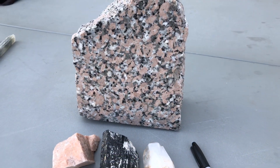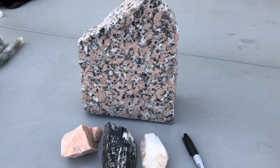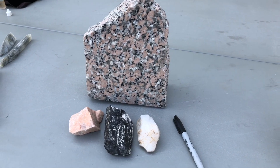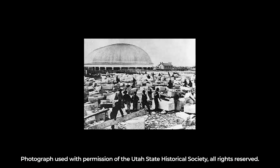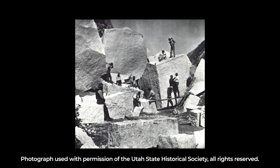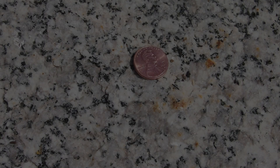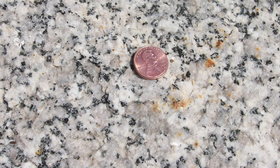Different combinations of minerals give us a lot of different varieties of granite, such as the salt and pepper, or temple granite, of the Salt Lake City Temple. It cooled and crystallized as a large mass about five miles beneath the ground surface some 26 million years ago. It took thousands of years to cool at that depth in the earth, and the granite grew nice, big, visible crystals.